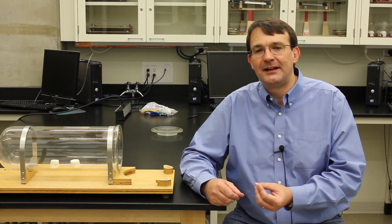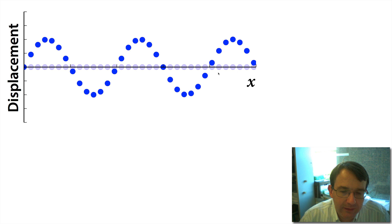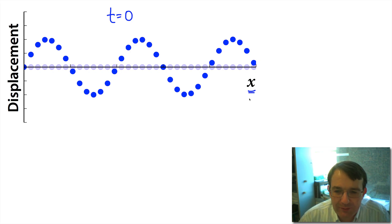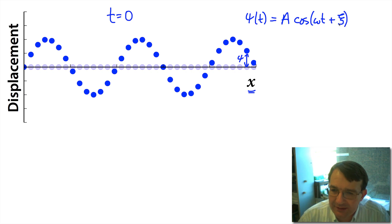So what we're going to do is start with our simple oscillator with a phase offset and consider what happens if that phase offset varies as a function of position, which is exactly what happens in a wave. Here we have a wave, and I've taken a snapshot at time t equals zero. You can see the displacements of the oscillators which make up the wave as a function of their position x. If I take one of these oscillators, the displacement from equilibrium psi is a simple harmonic oscillator, so psi as a function of time equals the amplitude A times the cosine of ωt, where ω is the angular frequency, plus an initial phase φ.